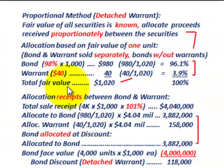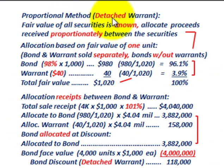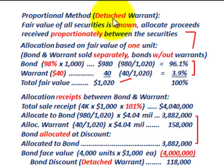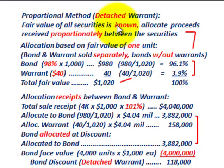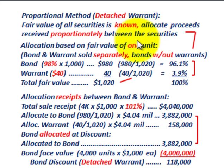Starting with the detachable warrant, we're going to use the proportional method. With the proportional method, you know the fair value of all the securities, and you allocate the proceeds received on the sale proportionately between the securities. We're looking at the allocation starting with the fair value of one unit — that is, the bond and the warrant sold separately.